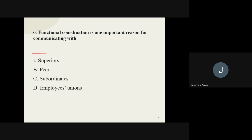Question number six: functional coordination is one important reason for communicating with whom? The options are superiors, peers, subordinates, and employees union. When we want to go for functional coordination, we communicate with subordinates. So the answer is subordinates.